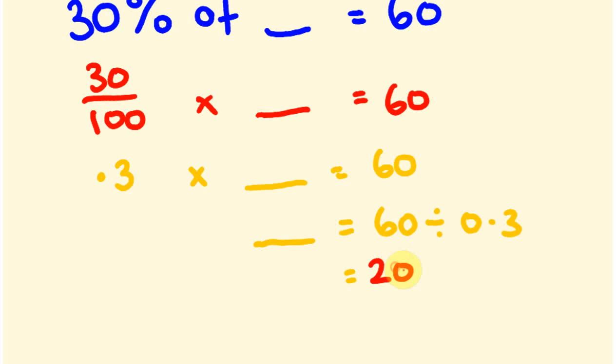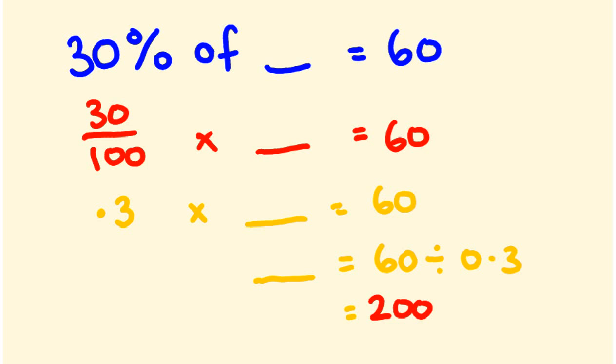Okay, so if we go back to our original thing, 30% of what number is equal to 60? 30% of 200 is equal to 60. So do you see how that works? First, change it into the fraction, change it into the decimal. So you might even be able to skip this step fairly quickly and change it straight into the decimal.